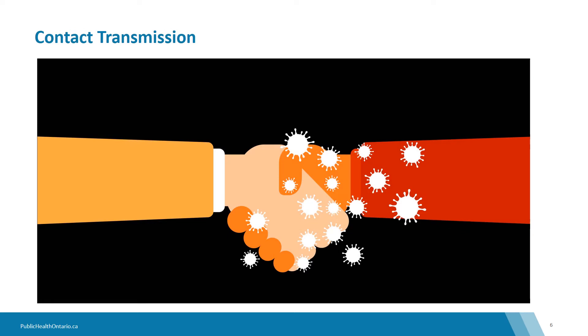Contact transmission is when infection is spread by direct contact with an infectious person — for example, holding or shaking hands — or by contact with a contaminated item or surface, which is also called fomite transmission.